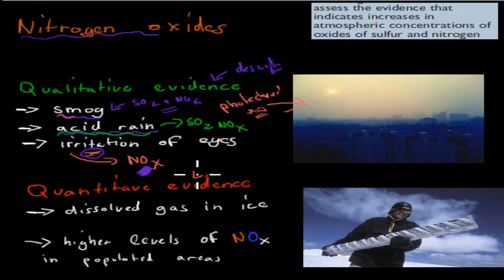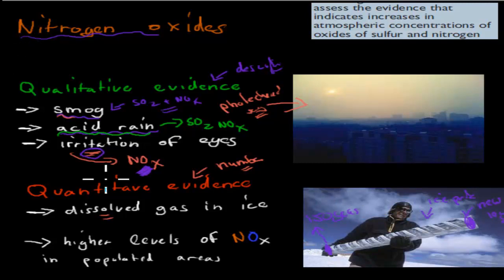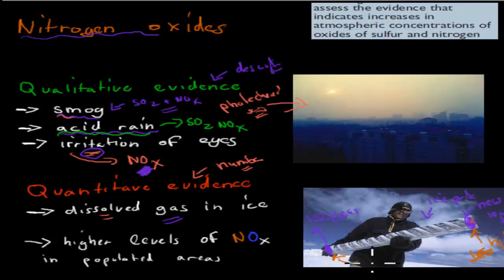The quantitative — number — evidence for an increase in nitrogen levels is dissolved gas in ice. We use an ice probe from the Antarctic or anywhere else with lots of ice. The top part is newly formed ice, maybe about 10 years old, whereas the bottom ice is really old — perhaps 150 years old. We look at the dissolved gases in each layer. If the new area has much higher levels of nitrogen monoxide dissolved compared to the old areas, that means over the last 150 years there's been an increase in concentration. We can use these ice probes to analyze that.